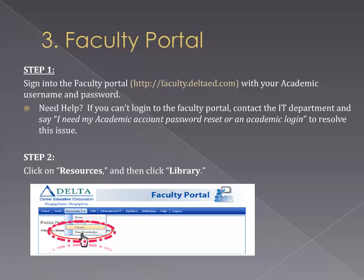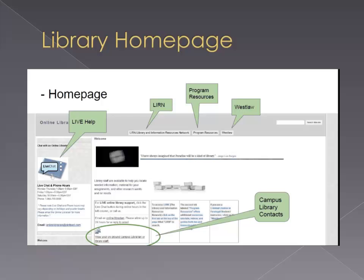Step one: sign into the faculty portal at faculty.deltaed.com with your academic username and password. If you are having trouble logging in, contact the IT department and say 'I need my academic account password reset' or 'an academic login' to resolve any issues. And step two: click on Resources and then click Library.